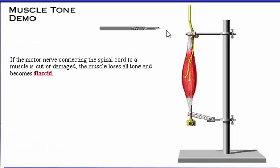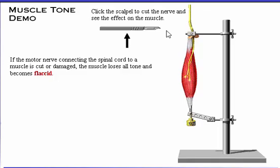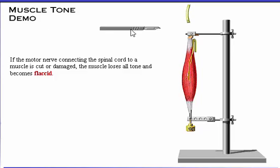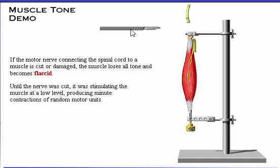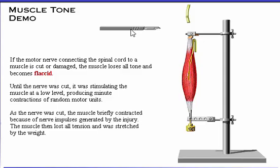If the motor nerve connecting the spinal cord to a muscle is cut or damaged, the muscle loses all tone and becomes flaccid. Click the scalpel to cut the nerve and see the effect on the muscle. Did you notice the increase in the muscle's length? This indicates that until the nerve was cut, it was stimulating the muscle at a low level, producing minute contractions of random motor units. As the nerve was cut, the muscle briefly contracted because of nerve impulses generated by the injury. The muscle then lost all tension and was stretched by the weight.